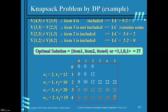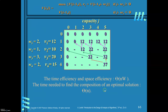One interesting observation: here we computed only 11 values instead of all 20 values. In the bottom-up approach, you need to compute all 20 values to find the answer of 37. But with the memory function, it is sufficient to compute only 11 values — about half. This means you can optimize the time required to find the solution, making the memory function more efficient than the bottom-up approach for the knapsack problem.